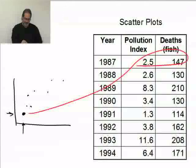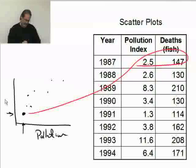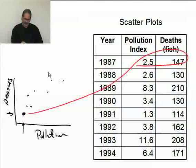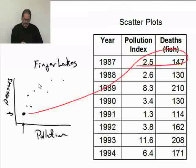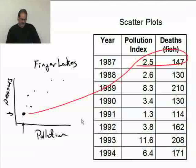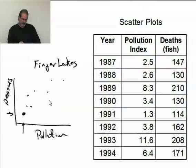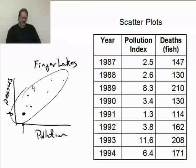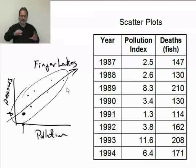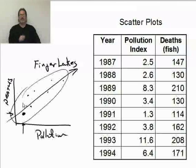That's your scatter plot. We definitely want to label the axes — this is pollution and this is death — and we should give it a title like Finger Lakes so the reader knows exactly what we're dealing with. Later, we'll take a look at the general shape of this scatter plot. In this case it appears to be somewhat linear, and that shape will help direct us toward appropriate analytical techniques to describe the data better.